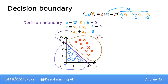So this line turns out to be the decision boundary. Where the features x are to the right of this line, logistic regression predicts 1, and to the left of this line, logistic regression predicts 0. In other words, we've just visualized the decision boundary for logistic regression when the parameters w1, w2, and b are 1, 1, and negative 3. Of course, if you had a different choice of parameters, the decision boundary would be a different line.